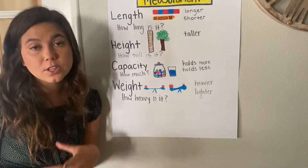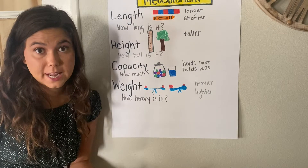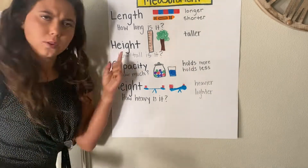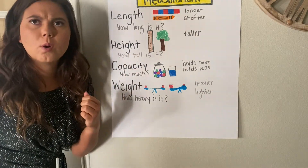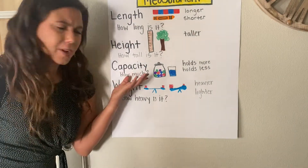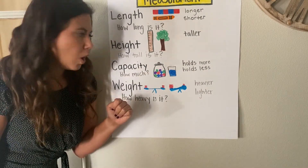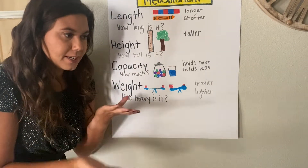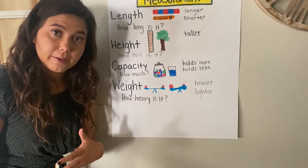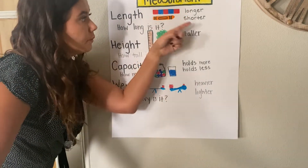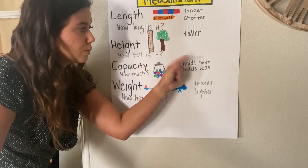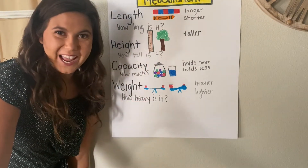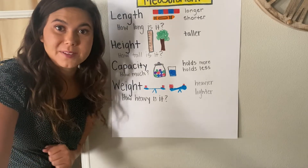I still have our measurement chart up because these are the words we're going to be using in our lesson today. We're going to be looking at objects and deciding: could we measure how long or how tall they are? Could we measure how much they could hold? Or could we measure how much they weigh? We're going to use our words: longer, shorter, taller, holds more, holds less, heavier, and lighter. Let me get some objects so we can talk about some examples.